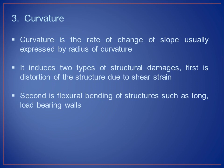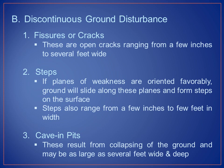Curvature is the rate of change of slope, usually expressed by radius of curvature. It induces two types of structural damage: first, distortion of the structure due to shear strain; second, flexural bending of structures such as long load-bearing walls. Discontinuous ground disturbance includes: fissures or cracks — open cracks ranging from a few inches to several feet wide; steps — where planes of weakness cause the ground to slide and form steps on the surface, ranging from a few inches to a few feet in width; and cave-in pits, which result from collapsing of the ground and may be several feet wide and deep.